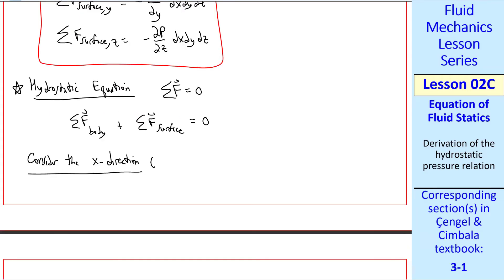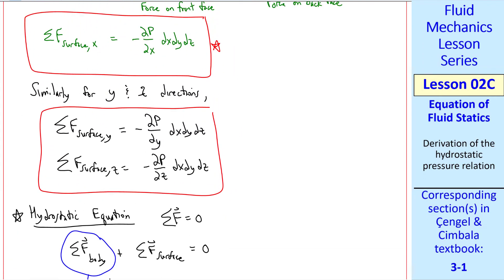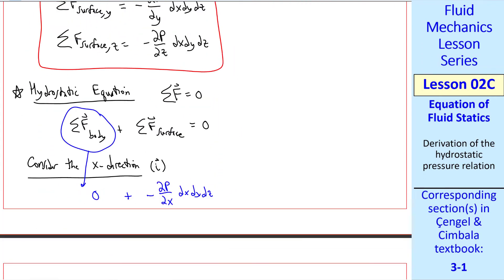In the x direction, there's no body force. So that term is zero. And in the x direction, the surface force was given up here. Negative del p del x dx dy dz. The sum of these has to equal zero. And we simplify this to del p del x equals zero. This is very significant. It tells us that pressure does not vary in the x direction in hydrostatics. We're assuming, of course, that gravity acts in the minus z direction.